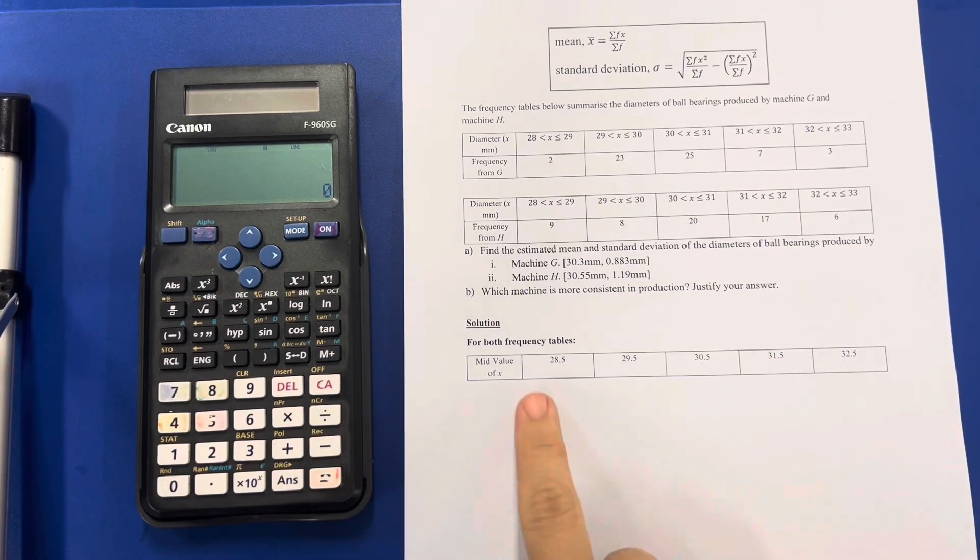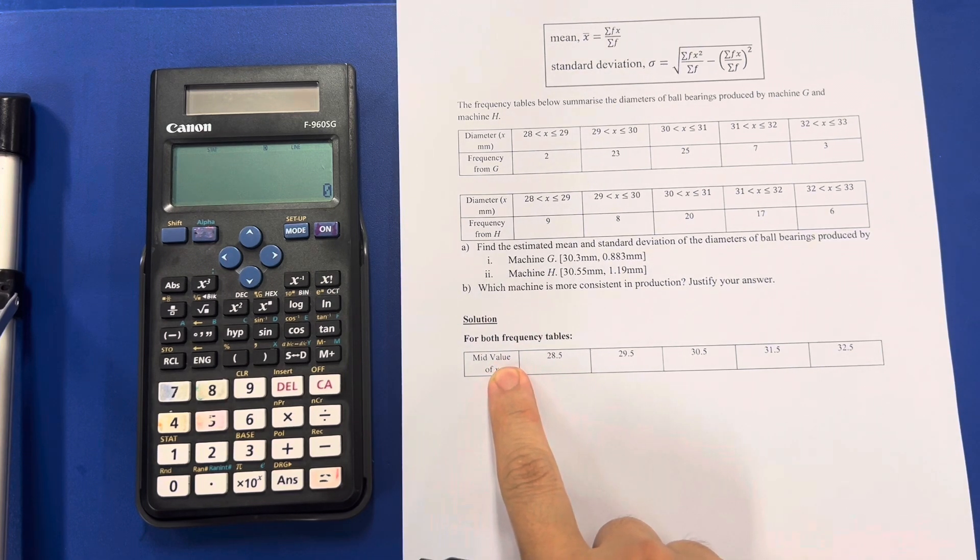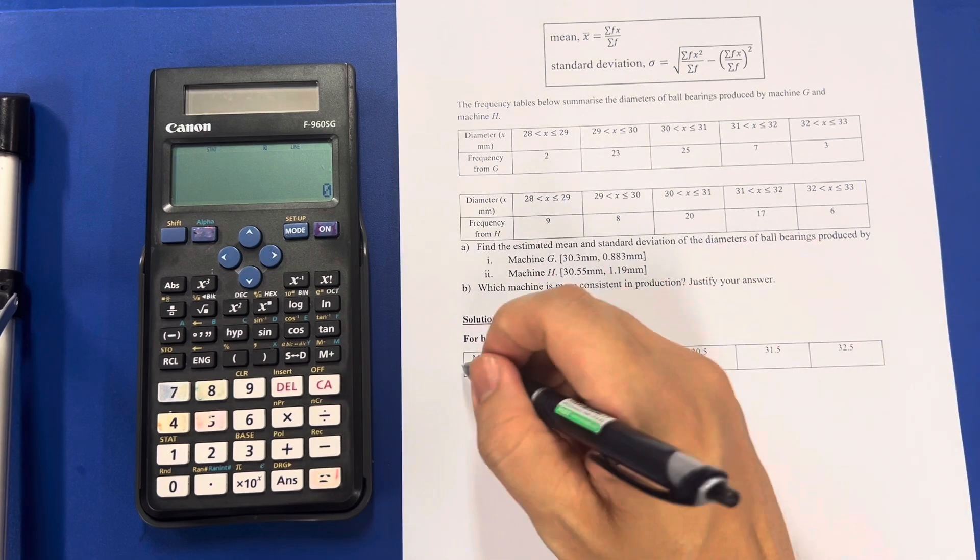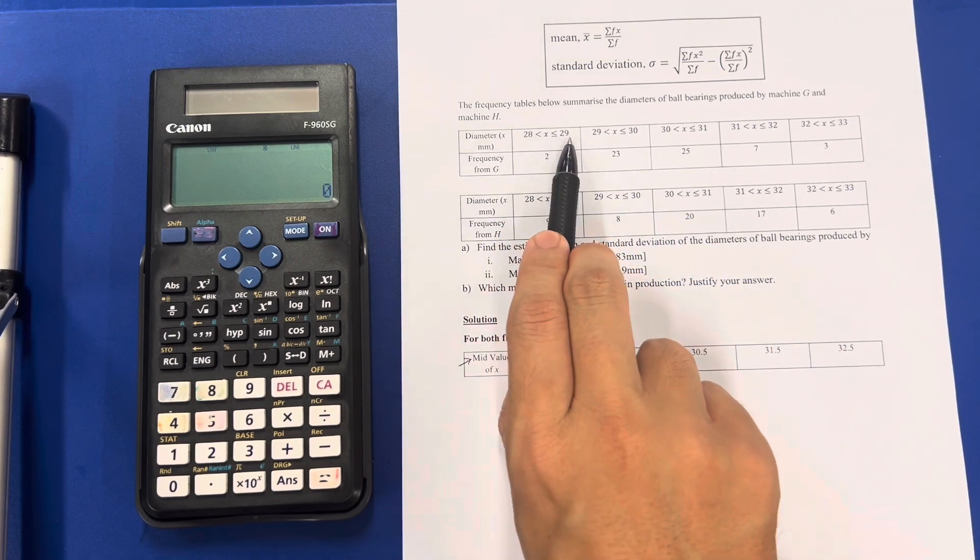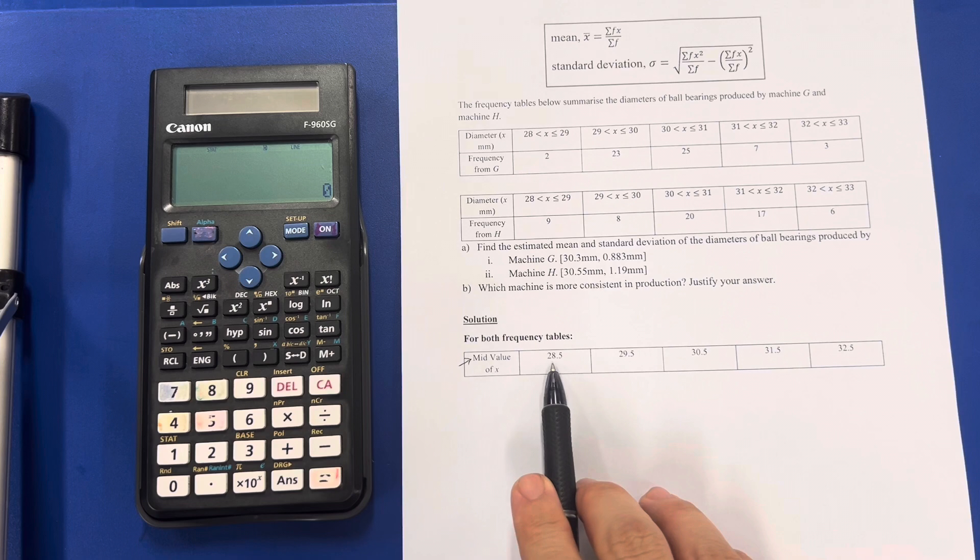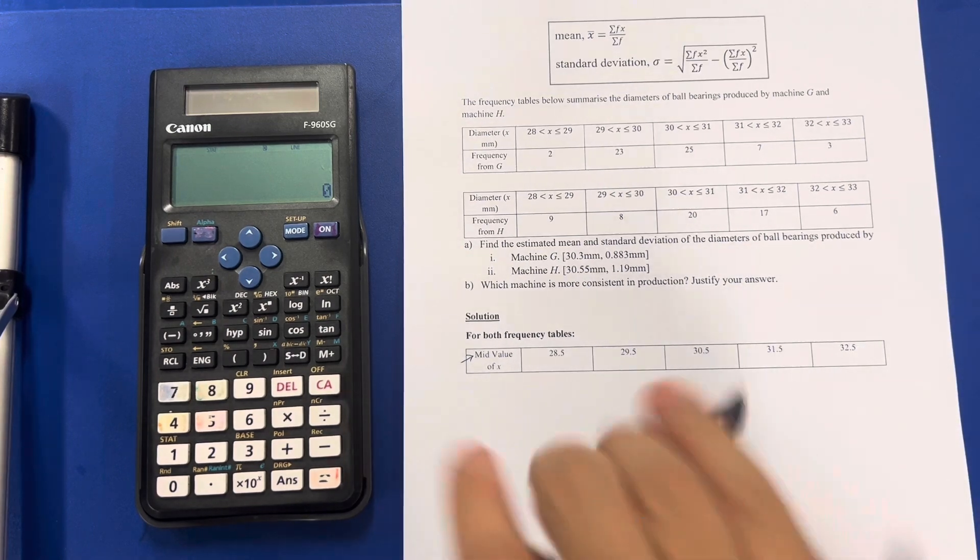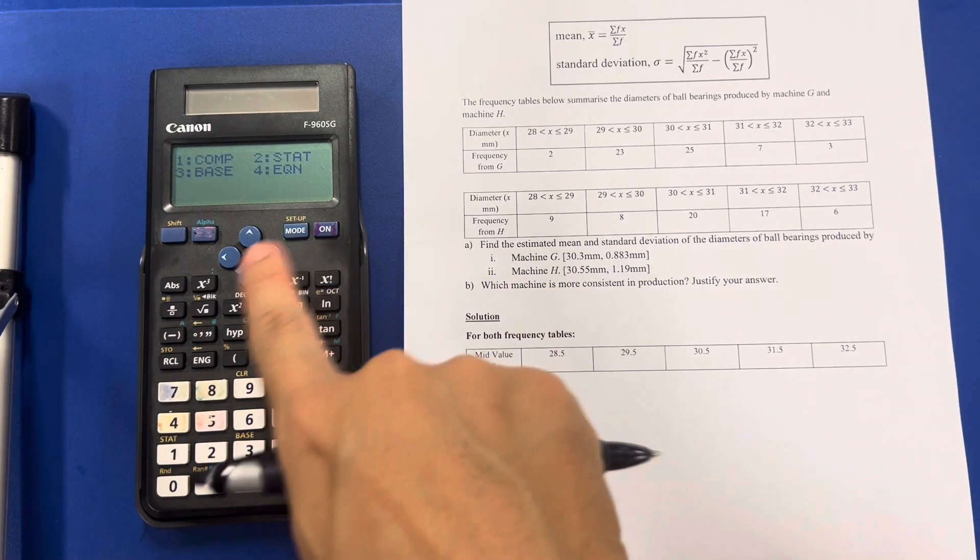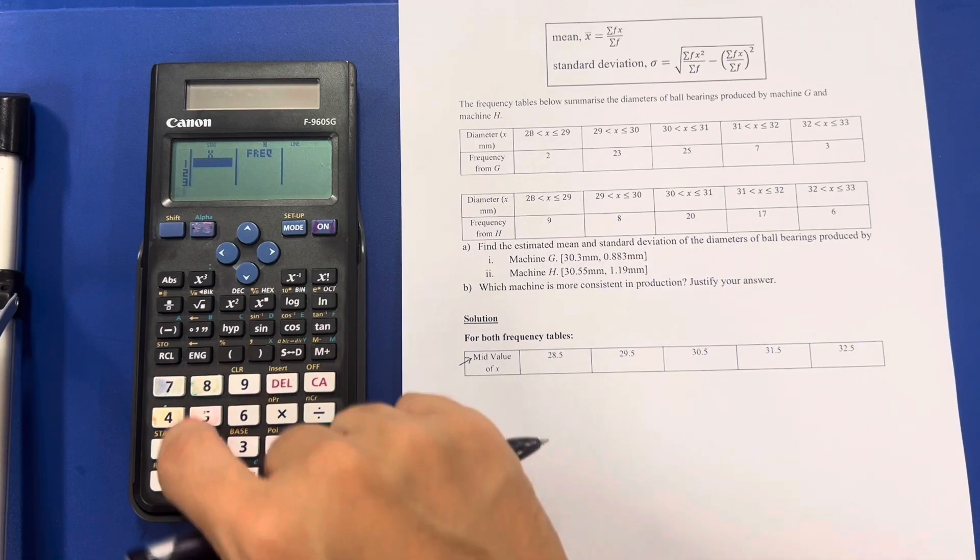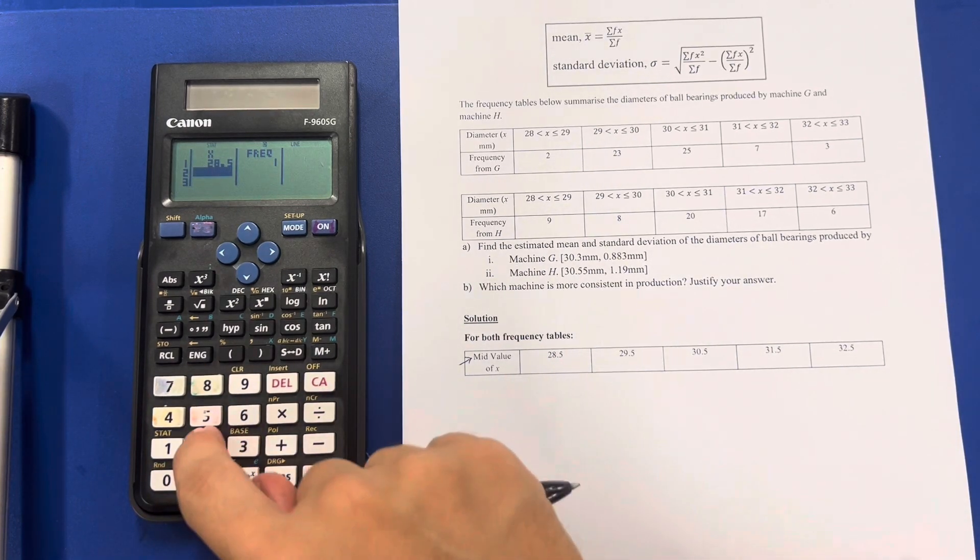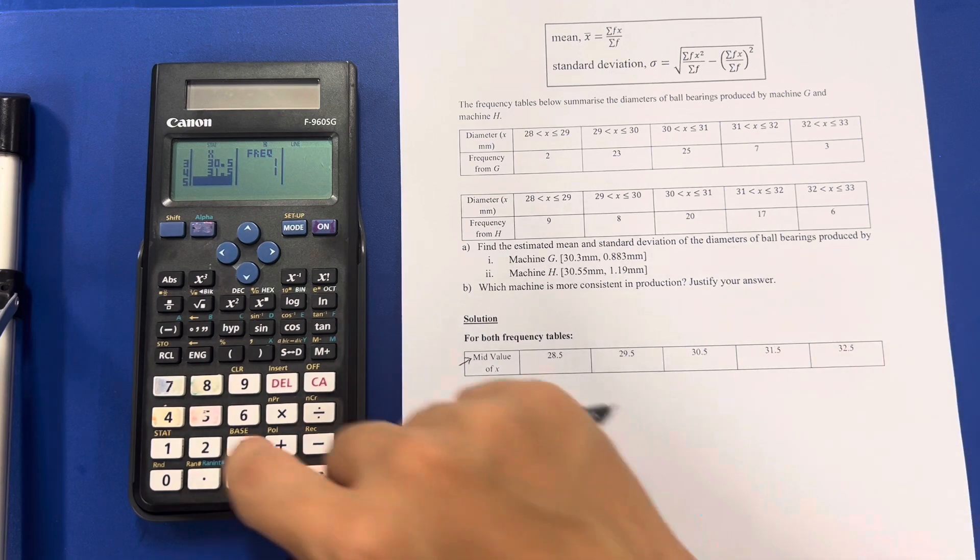So the very first thing for both frequency tables, for the x value which is the diameter, I will need to use what we call the middle value, the mid value of the interval. 28 and 29, I will need to use 28.5; 29 and 30, I'm going to use 29.5, so on and so forth. Then I'm going to use my calculator mode 2, 1, so my x will be 28.5, 29.5, 30.5, 31.5, and 32.5.